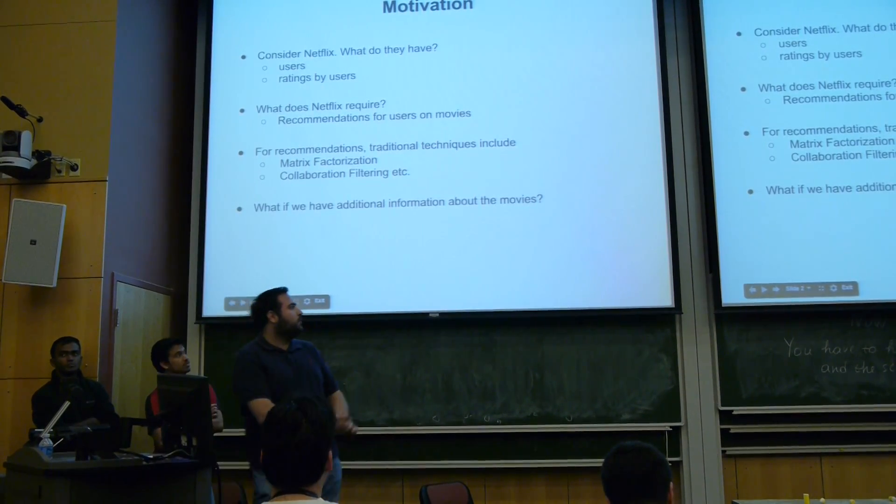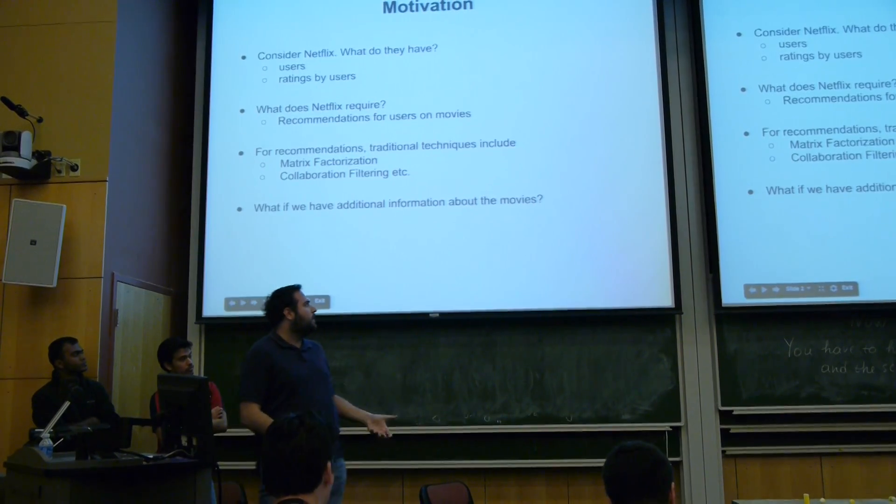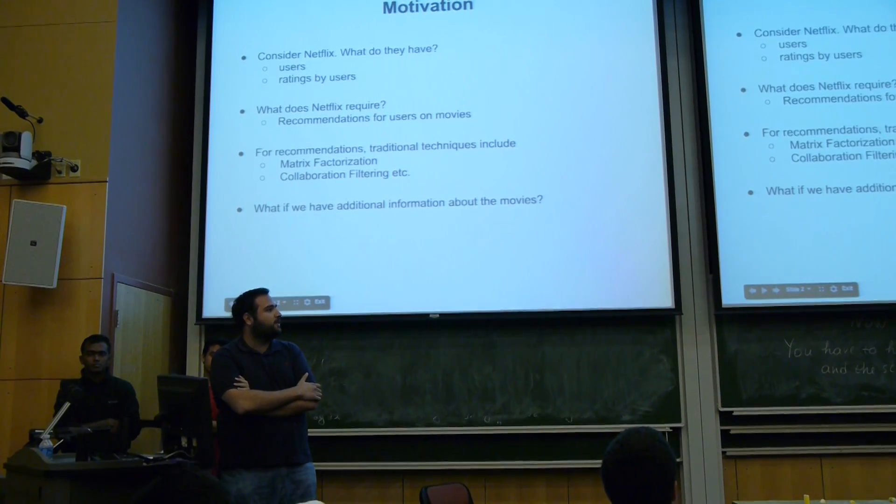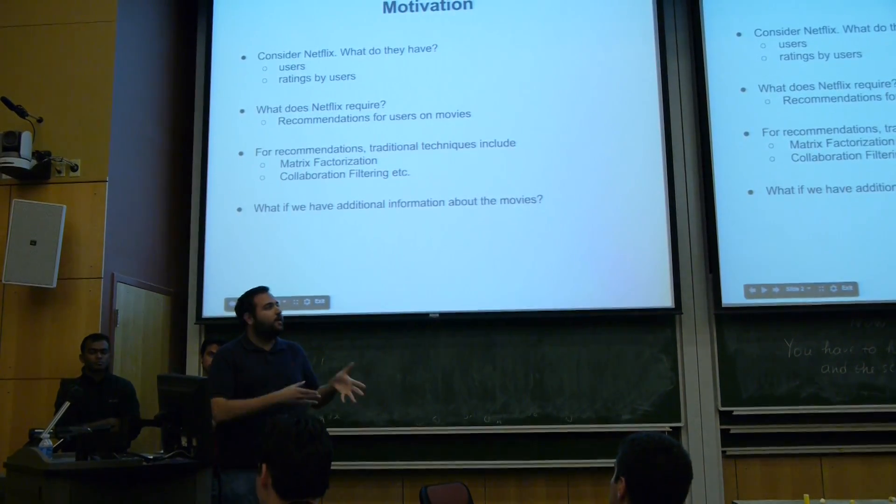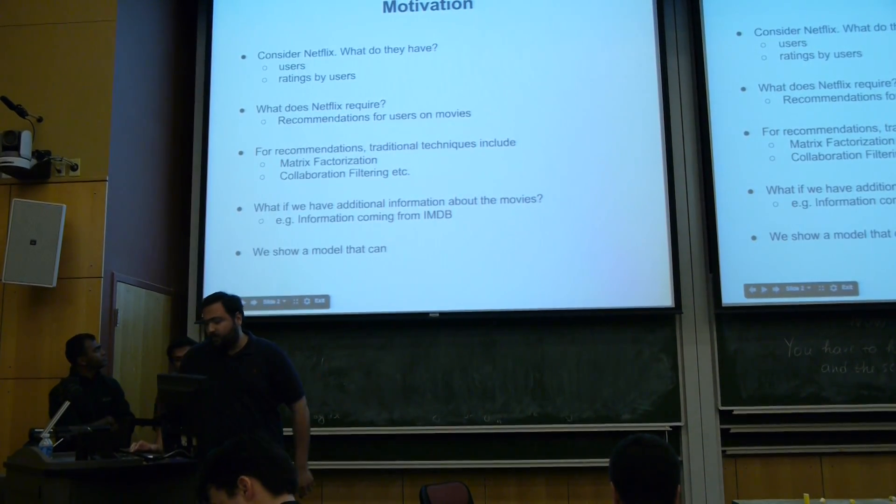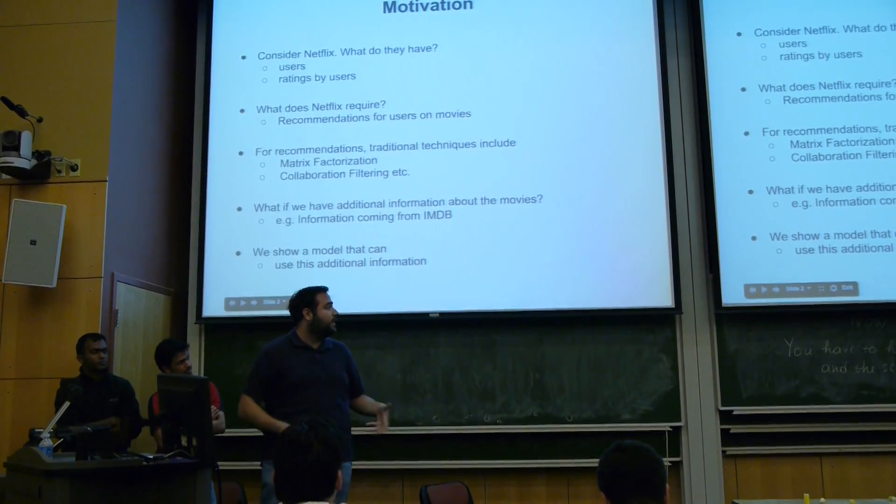And here's the question. What do we do if we also have some additional information about the movies? Let's say besides this rating that these users provide, we also have genre information from IMDB or some other ratings from IMDB. Here we just provide a model that can handle this joint analysis of these different sources of data.